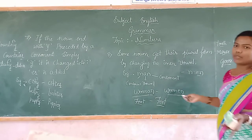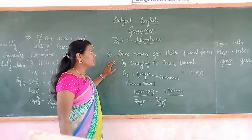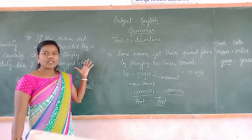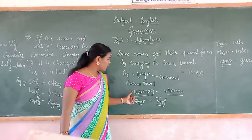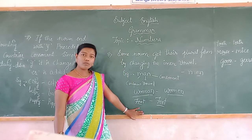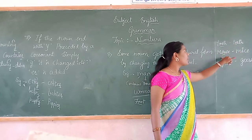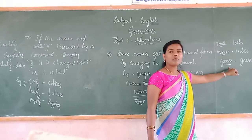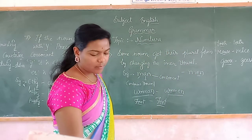Rule 8 is very simple: the noun gets plural form by changing the inner vowel. Man: inner vowel A → E = men. Woman: inner vowel A → E = women. Foot: inner OO → EE = feet. Tooth: inner OO → EE = teeth. Mouse: inner OU → I = mice. Goose: inner OO → EE = geese. Clear? Yes.